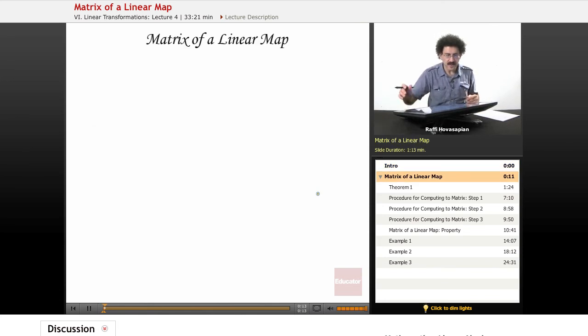We've already seen that when you have a linear map from Rn to Rm, let's say R3 to R5, that linear map is always representable by some matrix, a five by three map in this case, always.